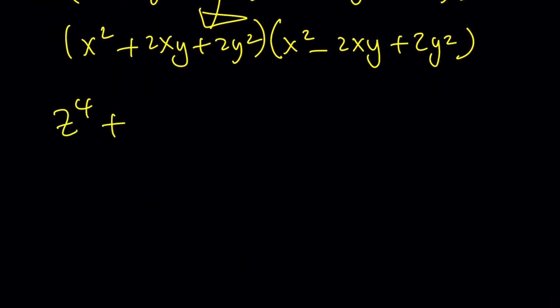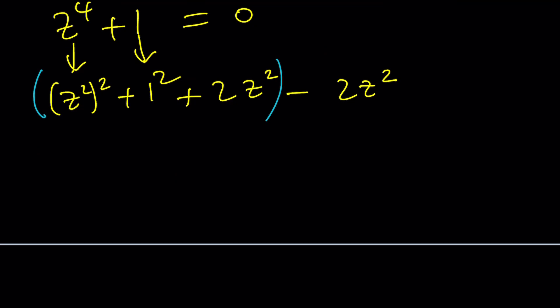The idea is to add something to make it a perfect square. This is z squared squared and this is 1 squared. What am I supposed to add? I'm supposed to add 2z squared times 1, which is 2z squared, and then subtract it. We can write it as a perfect square: z squared plus 1 quantity squared, and this is square root of 2 multiplied by z squared. Now we're going to set it equal to 0.